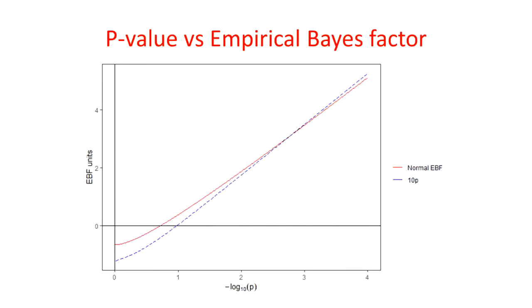So we've seen that there's an equivalence between z-scores or p-values and empirical Bayes factors. And here we have a plot on log scale comparing p-values and empirical Bayes factors. In red is the two-sided test of a normal variable, and in blue is the calibration for ten times the p-value. You can see that they're quite similar, and you can also see that there's almost a linear relation in log scale between p-values and empirical Bayes factors.